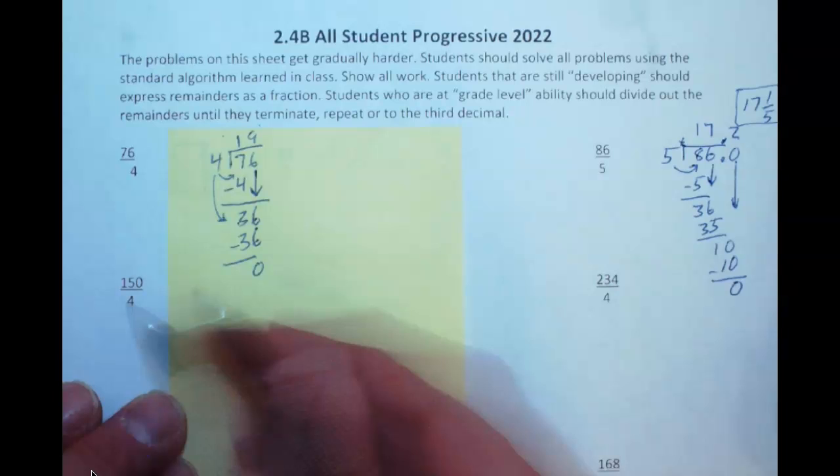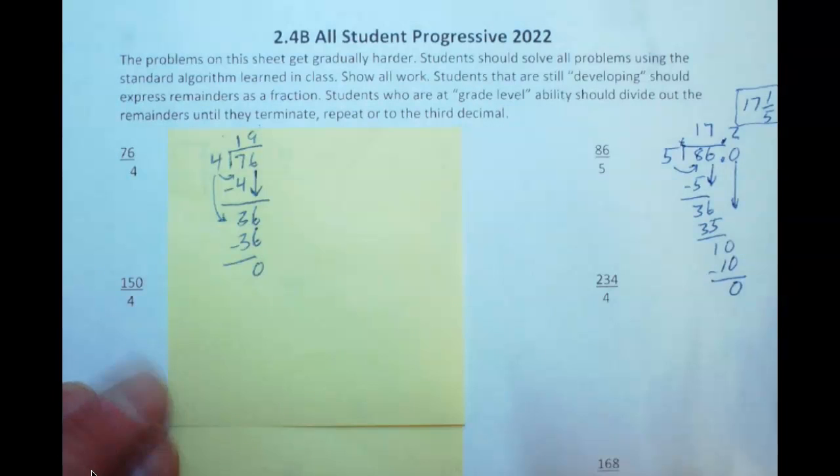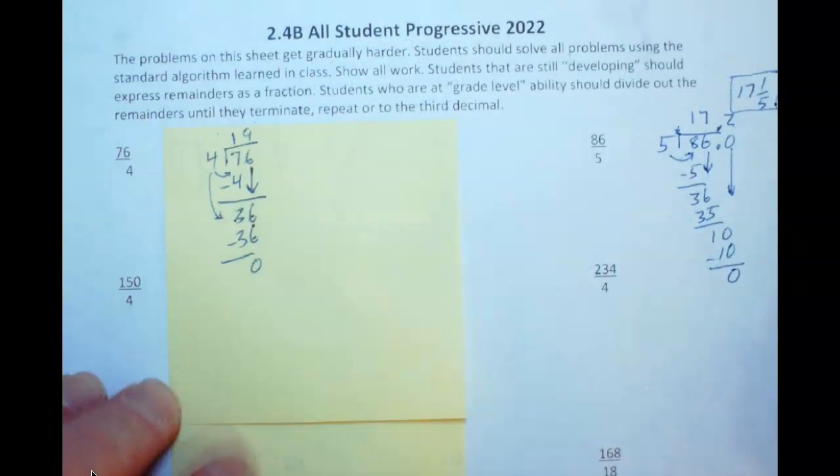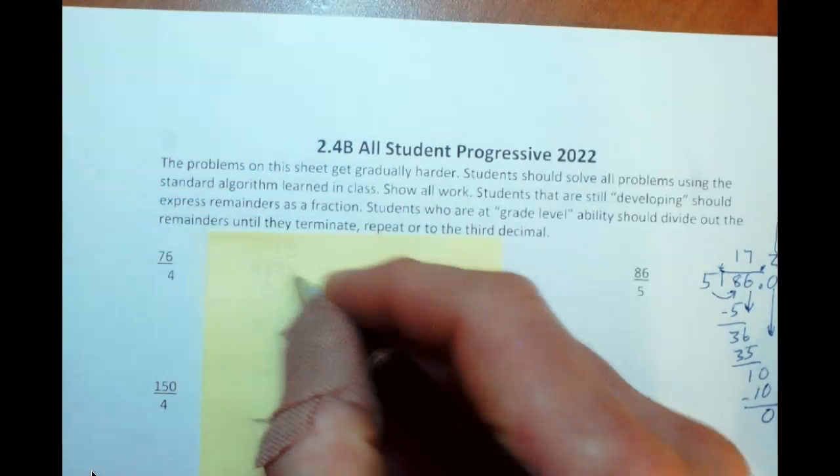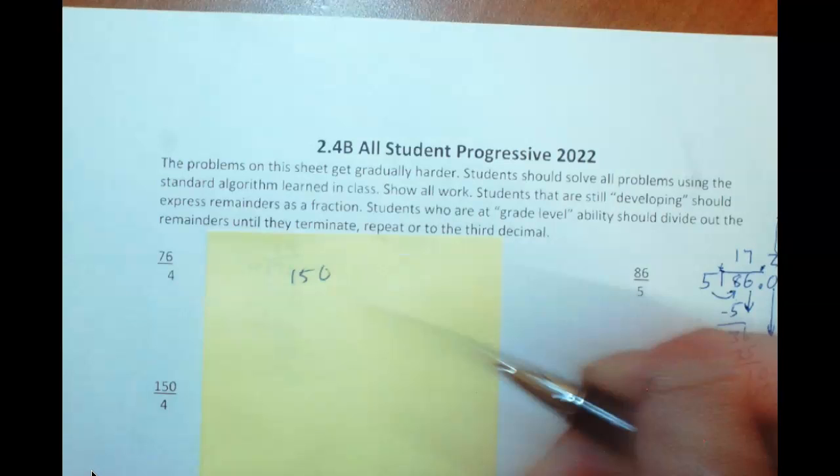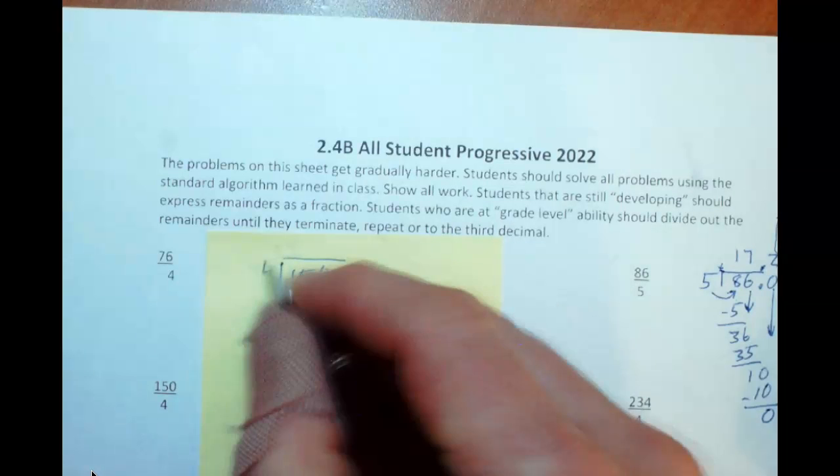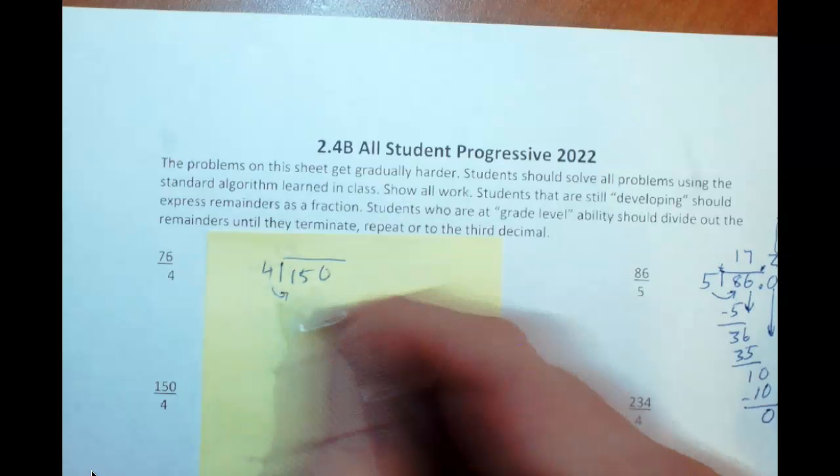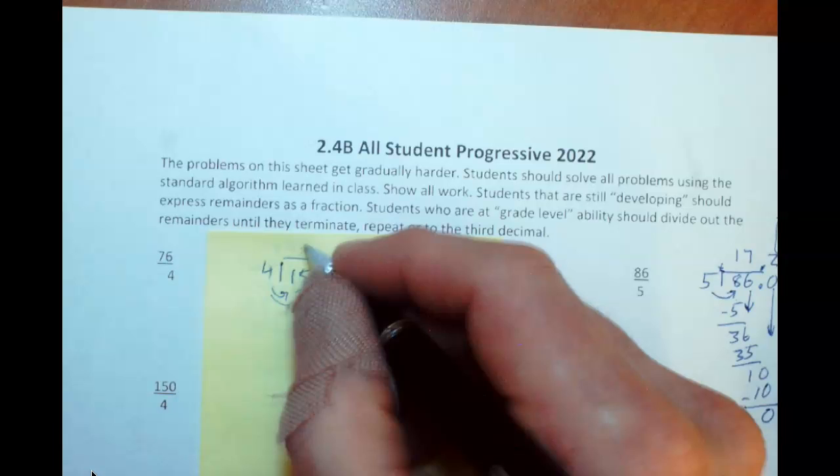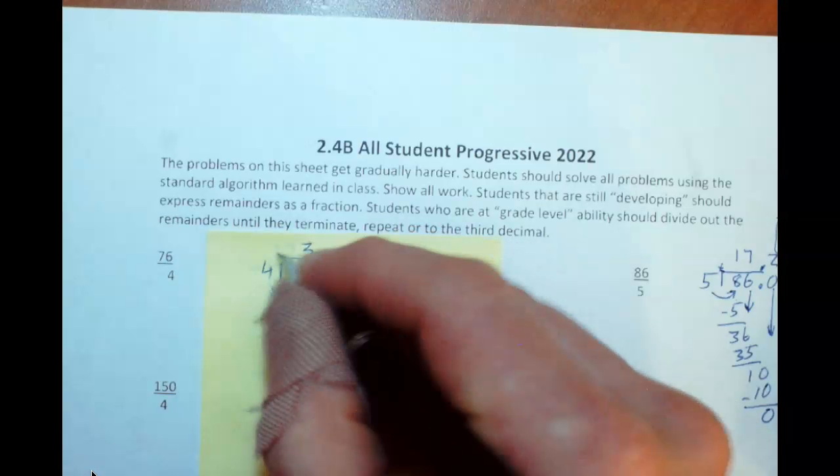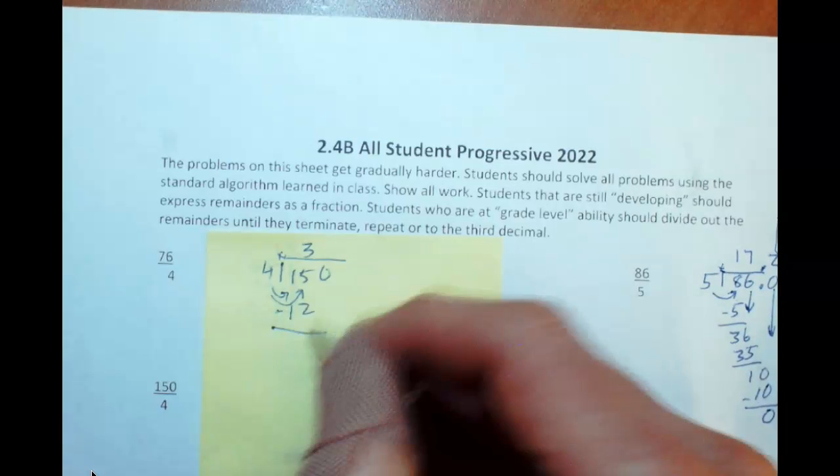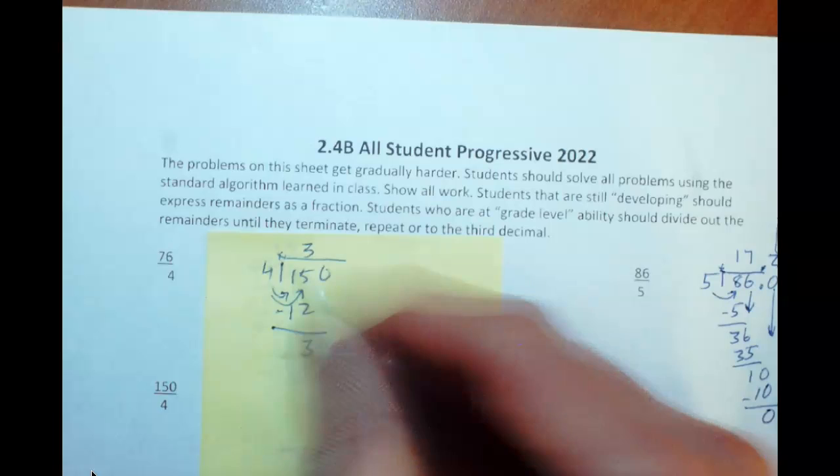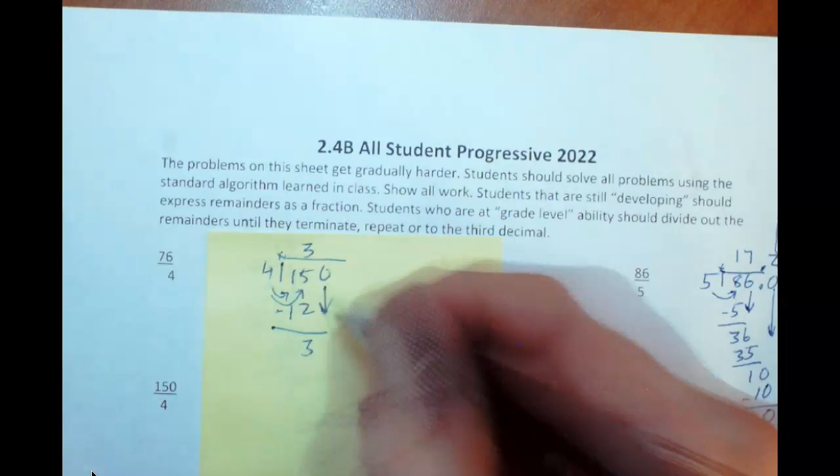Alright, let's do a problem in the next row. We have 150 divided by 4. Let's throw a new sticky on there so we can keep this clean and neat. So we have 150, we are dividing that by 4. 4 does not go into 1. 4 does go into 15, it goes in there 3 times. So we can say 4 times 3 is 12. And then we have to subtract that, 15 minus 12. Well, 5 minus 2 would be 3, 1 minus 1 is 0.